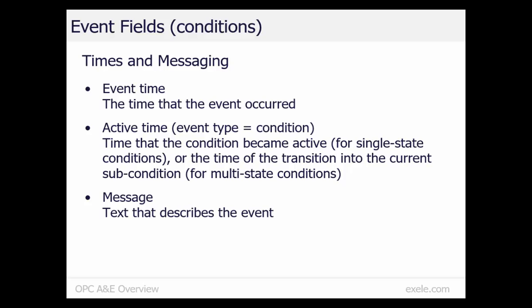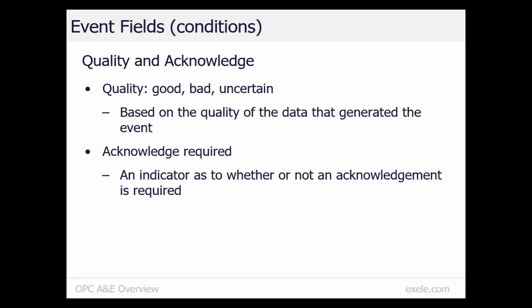The message is a text string that describes the event. For condition alarm events, the message is typically the alarm message. Quality indicates the quality of the underlying data items upon which the condition is based. The three basic quality values are good, bad, and uncertain. For example, a high condition event may be generated by a measurement value with an uncertain quality, and the event quality would also be uncertain.